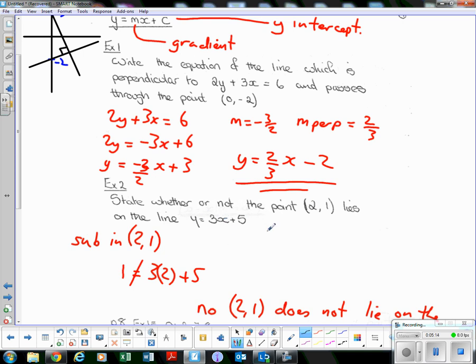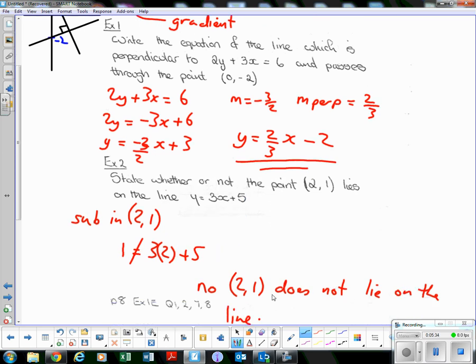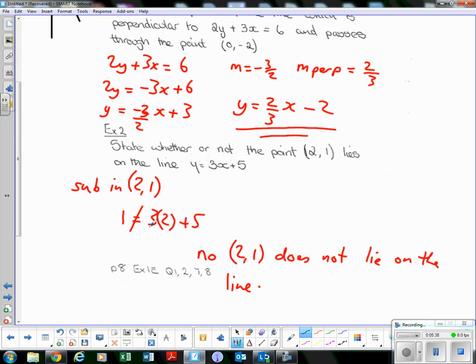So let's substitute in (2, 1). So x is 2, y is 1. It becomes 1 for the y, and substitute in x. 1 equals 3 times 2 plus 5. Clearly 1 is not the same as 3 times 2 plus 5. So as 1 is not equal to 3 times 2 plus 5, the point (2, 1) does not lie on the line. Again, if you got values that are equal, so if you had 7 equals 7 or 10 equals 10, then that point would lie on the line.